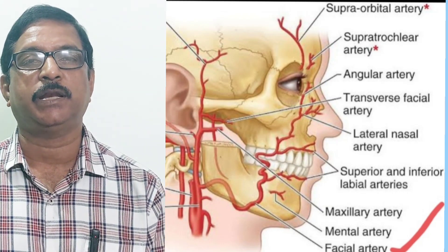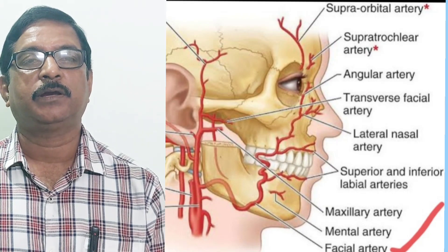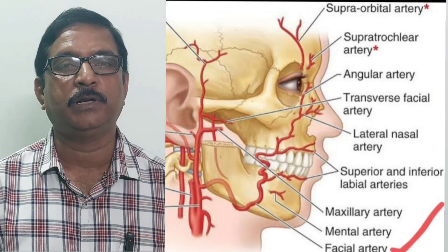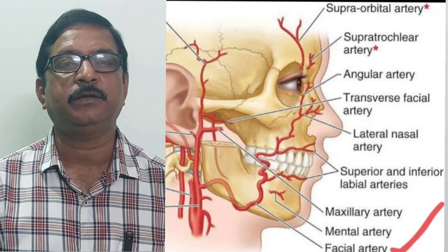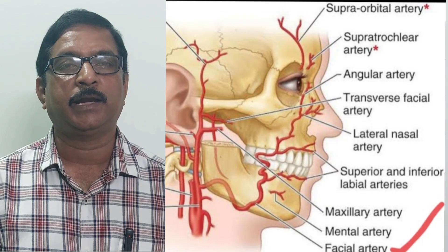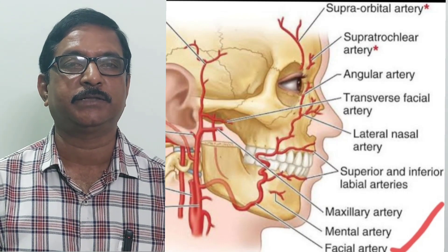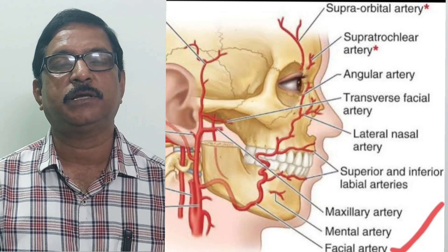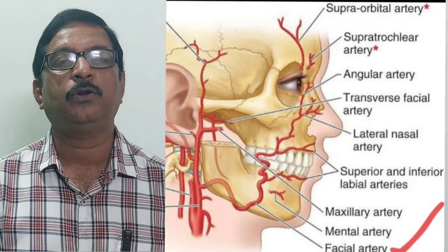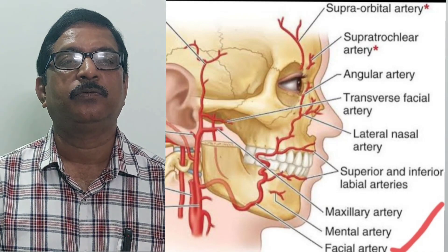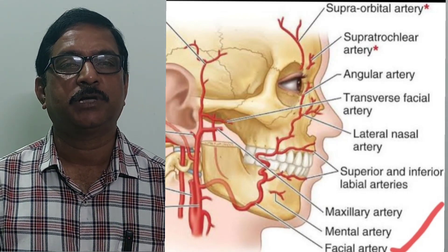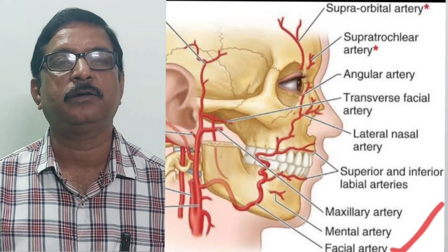Why is it tortuous in the neck? In the neck, this artery runs over the muscles of the pharynx, particularly the middle constrictor. So the tortuosity of the artery adapts itself to the movements of the pharynx. In the face, it is running over the mandible and over the cheeks. So during different facial expressions — laughing, crying, or other movements of the face, cheek, and mandible — the tortuosity of this artery adapts itself to the movements of the mandible, lips, and cheeks.